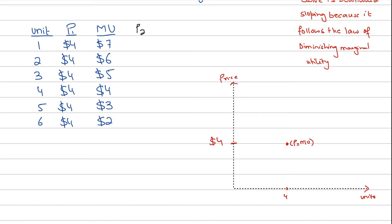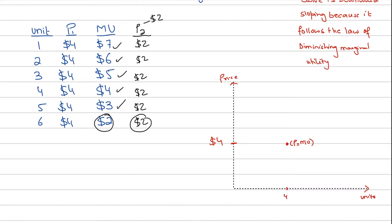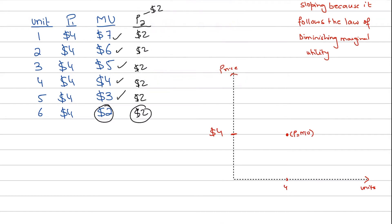Now let's assume the price of the good falls to P2, let's say $2. If the price falls to $2, will I consume the first unit? Yes, because MU of $7 is greater than $2. I'll consume the second, third, fourth, and fifth unit as well, because the fifth unit gives me a utility of $3 while the price is only $2 — so I still have a consumer surplus of $1. The sixth unit gives me a utility of $2 and the price is also $2, so there's no consumer surplus but no loss either. Consumer equilibrium is satisfied, and I'm consuming 6 units when price falls to $2.